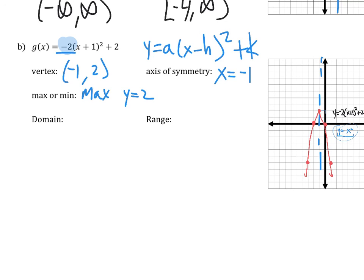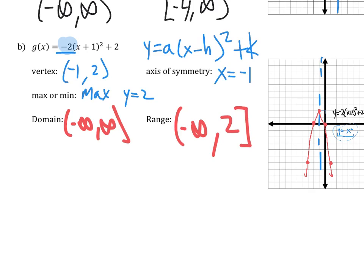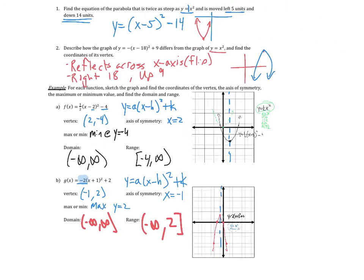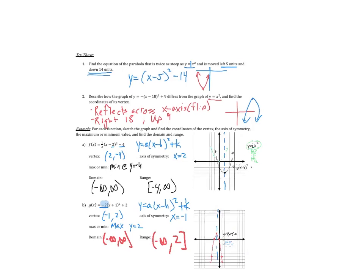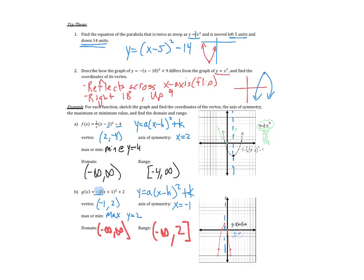The domain is always negative infinity to infinity — any x values work. The range goes from negative infinity up to 2, and 2 is included, so it's a hard bracket: negative infinity to 2. That's the idea. With some practice, just think about how it compares to y equals x squared: is it flipped, is it stretched, is it left or right? That's what the h and k numbers do.